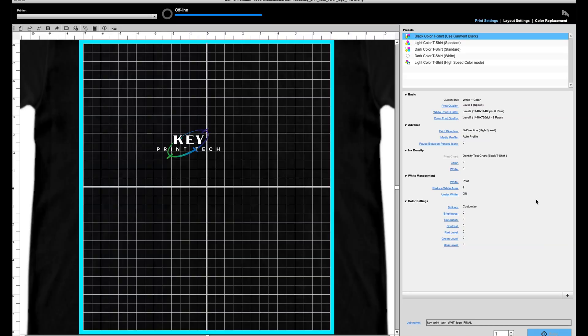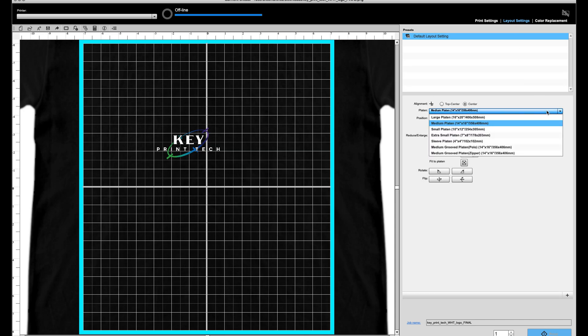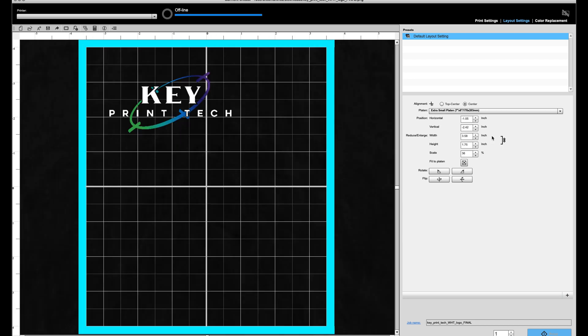Okay, now that we're in Garmin Creator, the first thing you want to do is go up to the layout settings. Then you want to change the platen size to what they call the extra small platen, that's the 7x8 canvas area that we need.